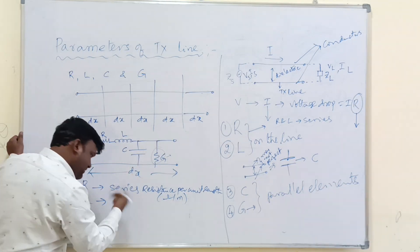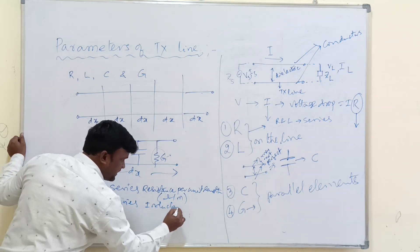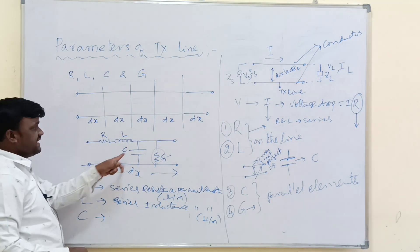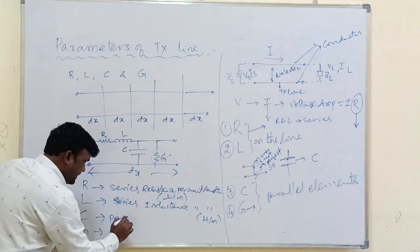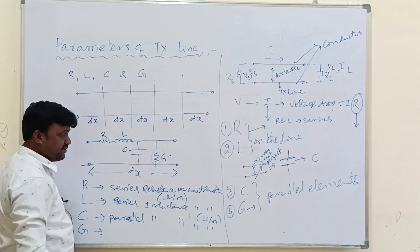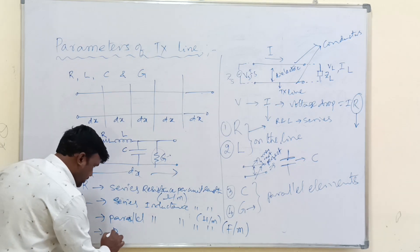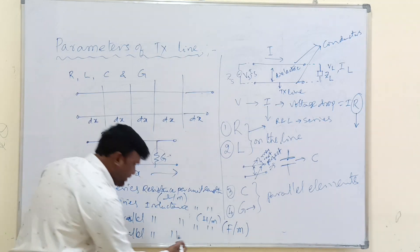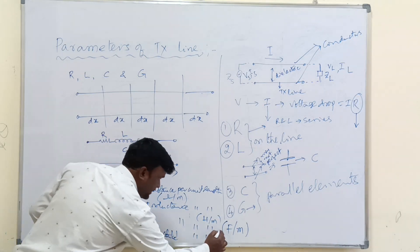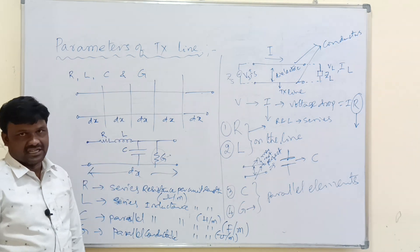L is a series element on the line, defined as series inductance per unit length, with units of henries per meter. C is a parallel element, defined as parallel capacitance per unit length, with units of farads per meter. G is also a parallel element, defined as parallel conductance per unit length, with units of mhos per meter. Resistance units are ohms per meter and conductance units are mhos per meter. This is all about the parameters of the transmission line.